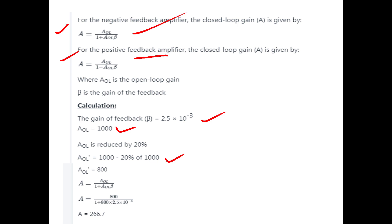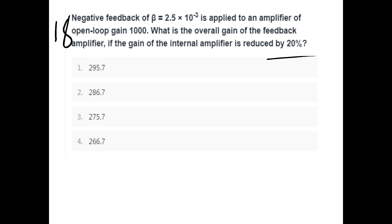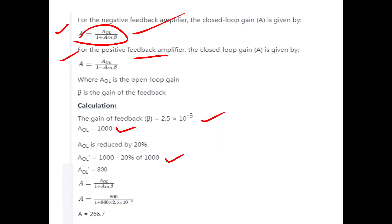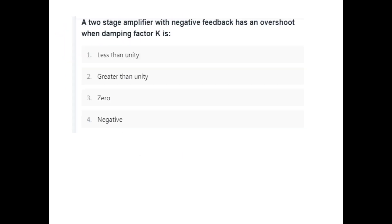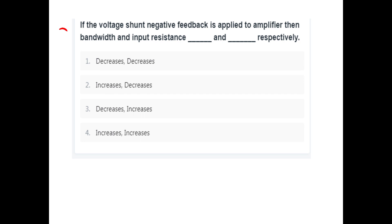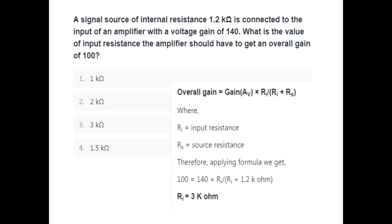AOL is 1000. Reduced by 20 percentage: 1000 minus 20% of 1000. We apply the negative feedback formula to find the new closed loop gain. Negative feedback increases bandwidth and increases input resistance.